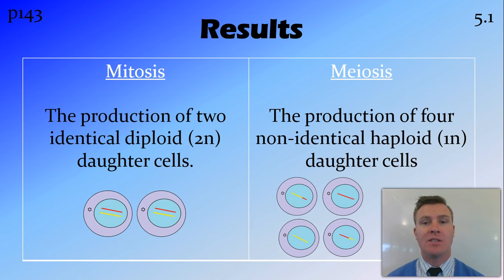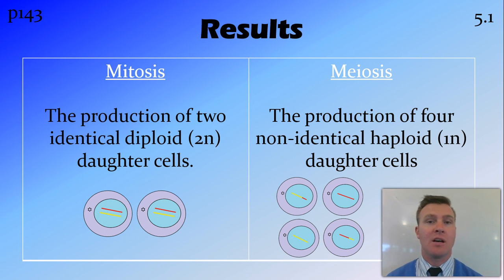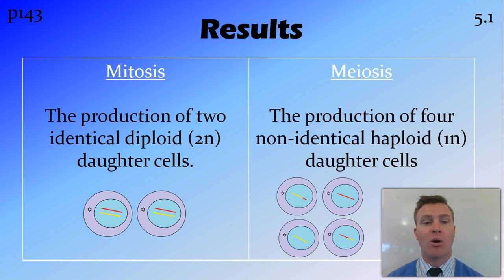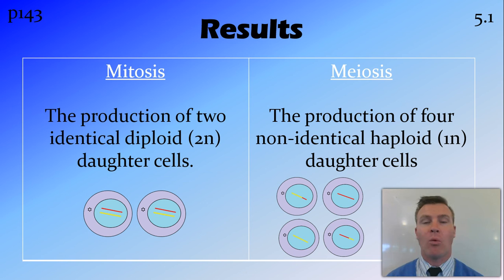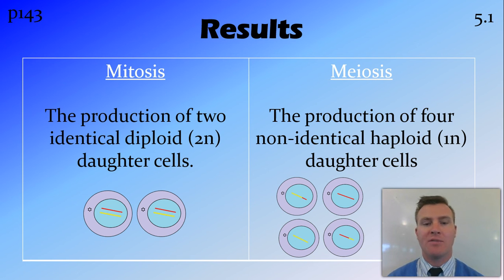Looking at the results of these two processes: in mitosis, we end up with two daughter cells because there's one round of cell division. These daughter cells are identical and have a diploid set of chromosomes — the full number that normal cells in the body have, or 2N. Meiosis, on the other hand, produces four daughter cells. These are haploid, or 1N, having half the number of chromosomes of normal cells. They are non-identical because throughout meiosis there's crossing over, where sections of DNA are swapped, making them non-identical.